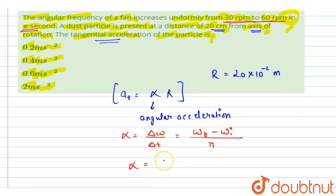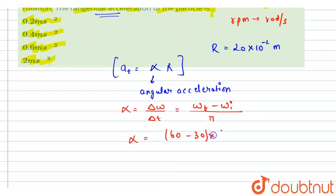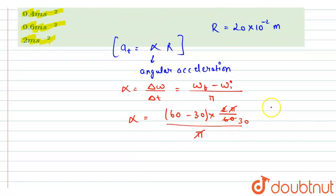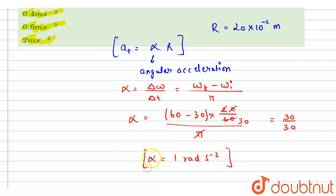Putting in the values: omega final is 60 rpm and omega initial is 30 rpm. Since the values are given in rpm, we convert to radians per second by multiplying by 2π/60, all divided by pi seconds. Pi and pi cancel out, and 2 cancels with 30. So 60 minus 30 is 30, divided by 30, giving alpha equals 1 radian per second squared.